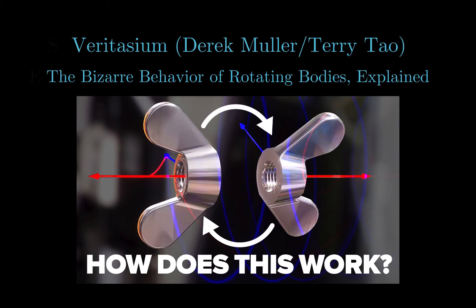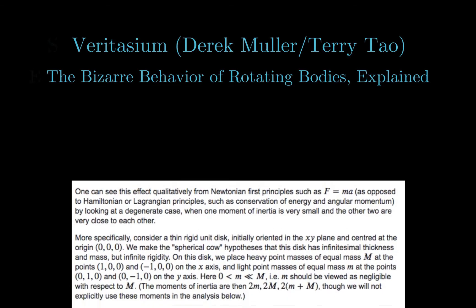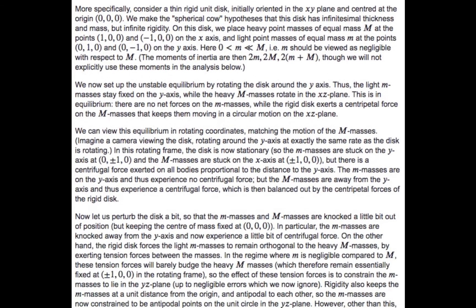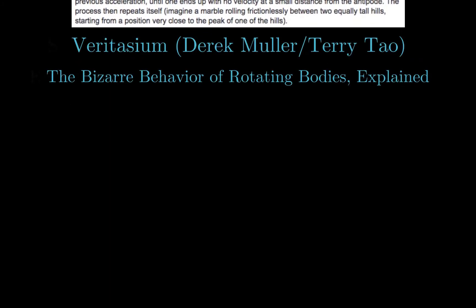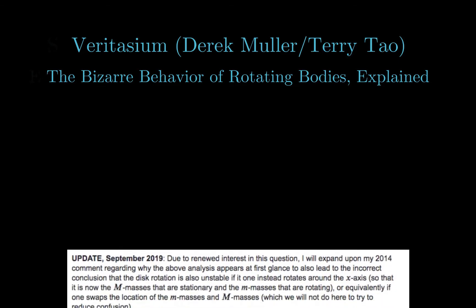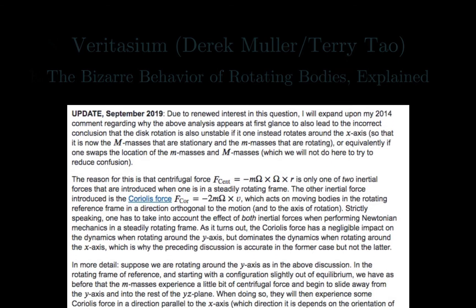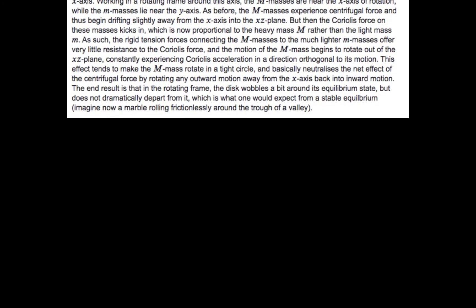Recently, Derek Muller released a video on his YouTube channel Veritasium, in which he explained the Dzhanibekov effect based on an argument given by UCLA mathematician Terry Tao on MathOverflow. This is a fascinating video, but the explanation is incomplete. The argument for why rotation about the intermediate axis should be unstable can also be applied to the other two axes, which leads to the conclusion that rotation about any axis should be unstable. Terry Tao addressed this shortcoming with an addendum to his original post. I have no doubt that Professor Tao's extended explanation is technically correct, but personally I find his line of reasoning difficult to follow and not very intuitive.